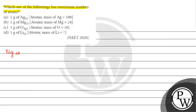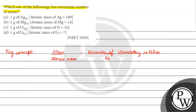The key concept for this question is mass divided by atomic mass — this gives us the number of moles. And number of moles is also equal to the number of elementary entities divided by Avogadro's number.